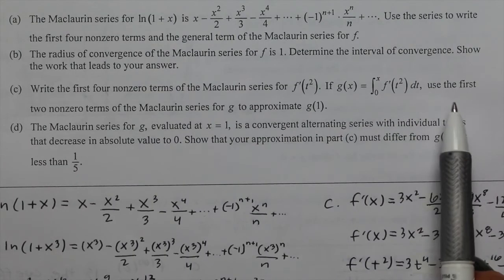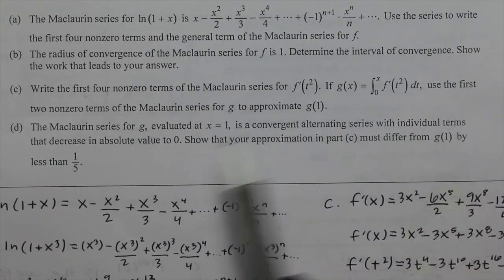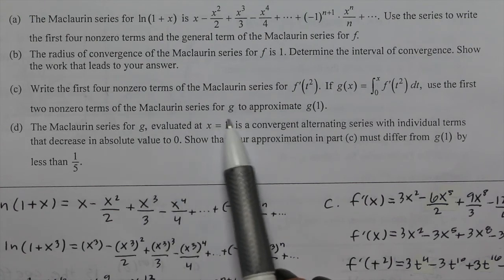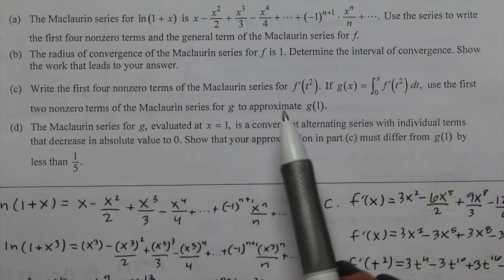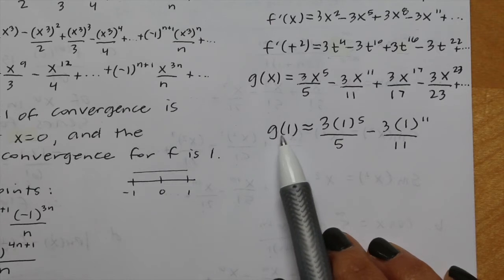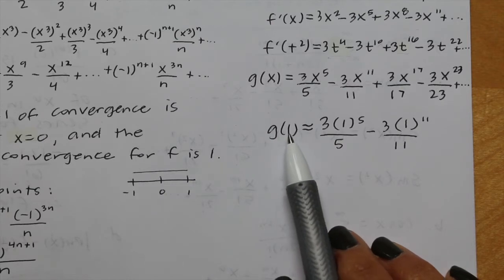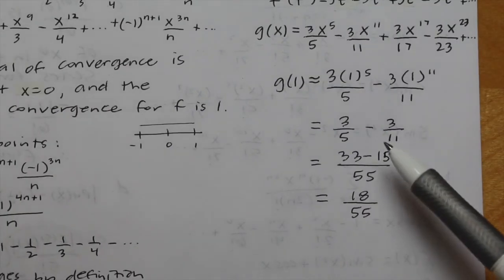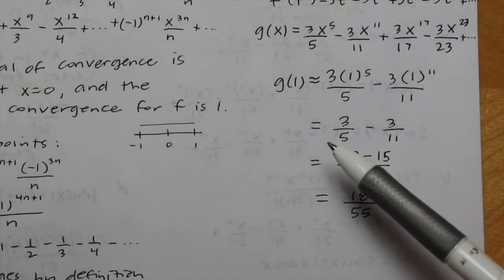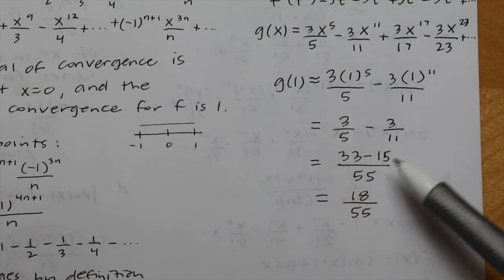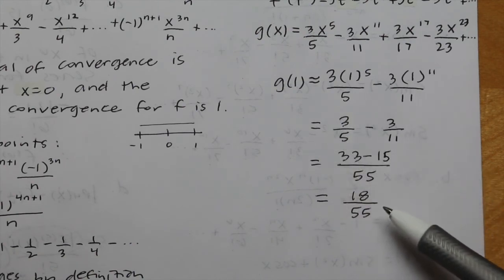Now using the first two non-zero terms of the McLaurin series for g to approximate g of 1, we plug in x equals 1 to those first two terms: 3 over 5 minus 3 over 11. Finding common denominators by multiplying 3 over 5 by 11 over 11 and 3 over 11 by 5 over 5, we get 33 over 55 minus 15 over 55, which equals 18 over 55.